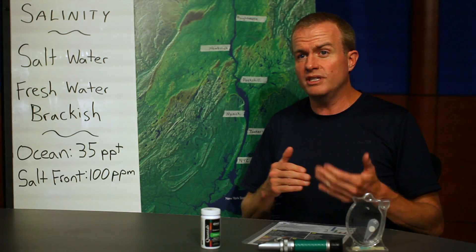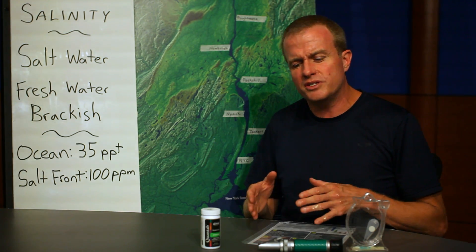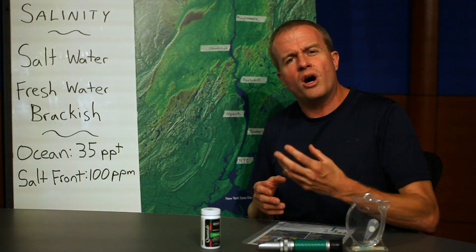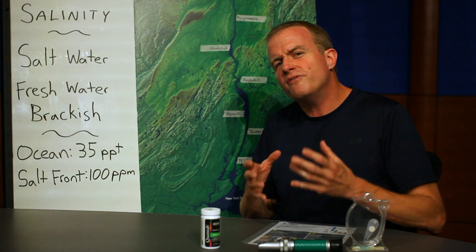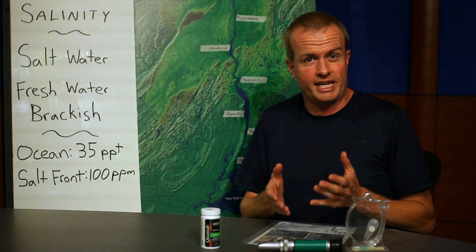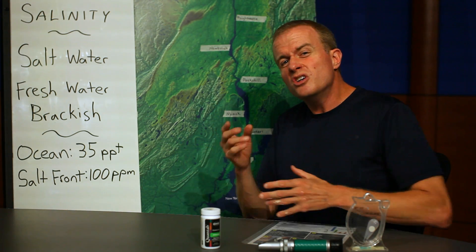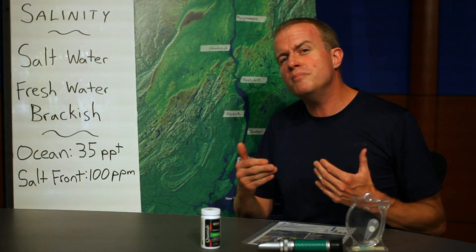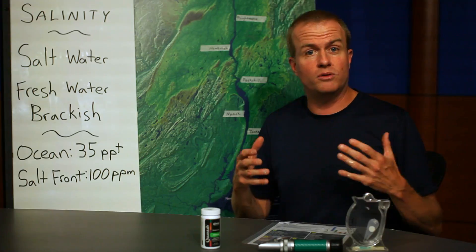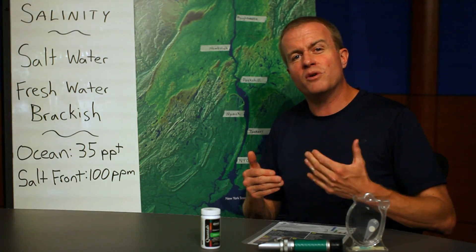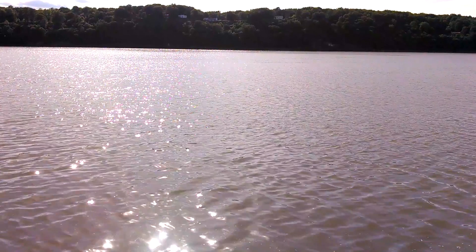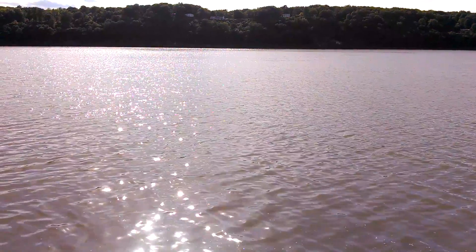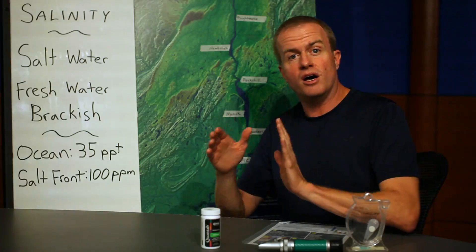We can measure salinity using a few different methods and in a couple of different units. In the ocean, full saltwater is usually measured at about 35 parts per thousand in the Atlantic. Whereas in freshwater, salt is so dilute we usually measure that in parts per million, or milligrams per liter, of chlorides. One term you might hear is salt front, which is the leading edge of dilute seawater, or about 100 milligrams per liter of chlorides.